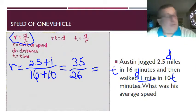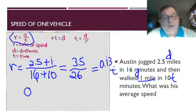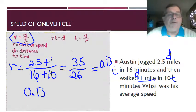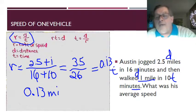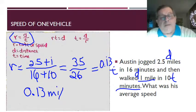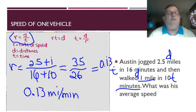And when we do, we will come up with an answer of 0.13. Now 0.13 what? Because when we're dealing with formulas, we're dealing also with units of measurement. Well in our numerator we had miles, so 0.13 miles, but in our denominator we had minutes, so it is 0.13 miles per minute.